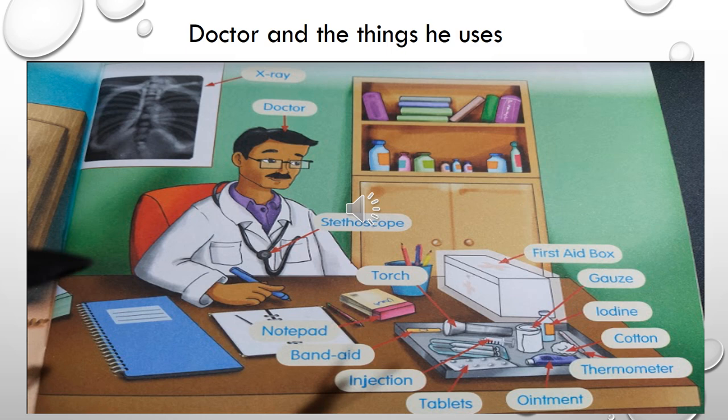Now we can see the different things that the doctor uses. Can you see this doctor has something around his neck that is called a stethoscope? And then next to him can you see a white color box - that is the first aid box. It is required whenever we get hurt so that he has all the essential things.